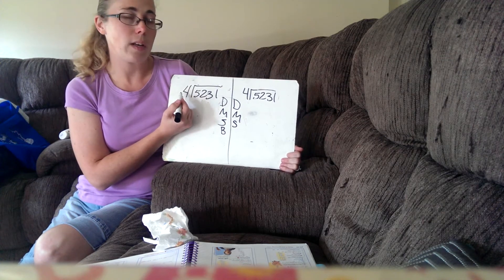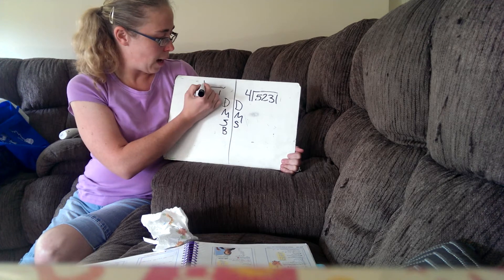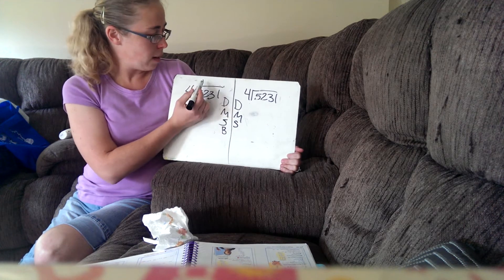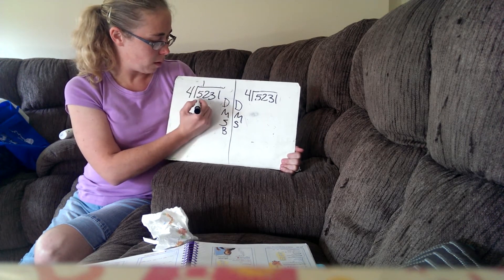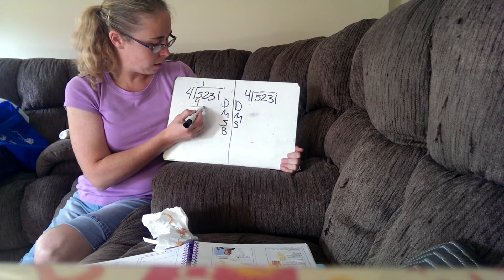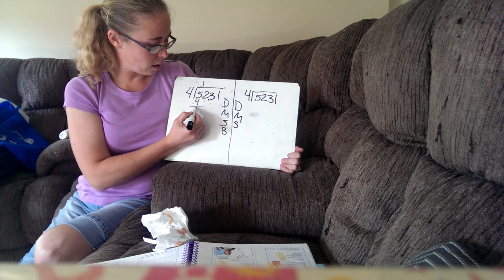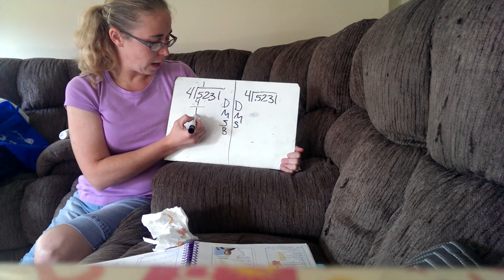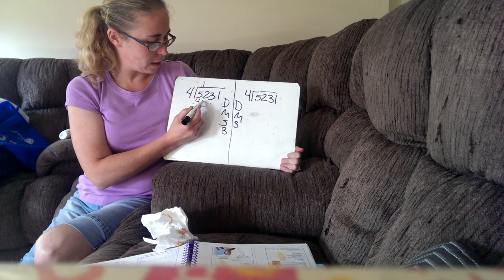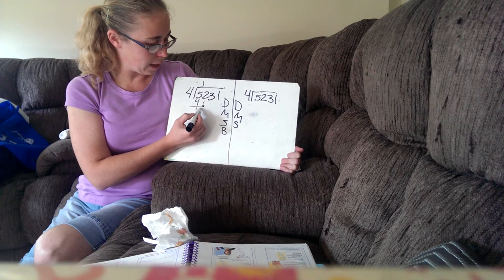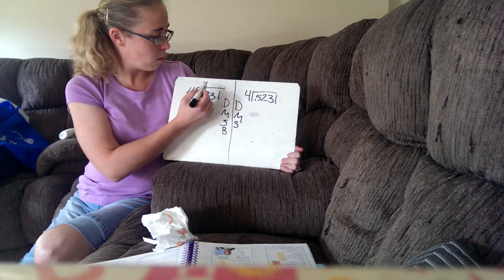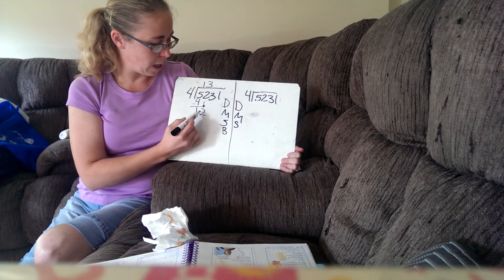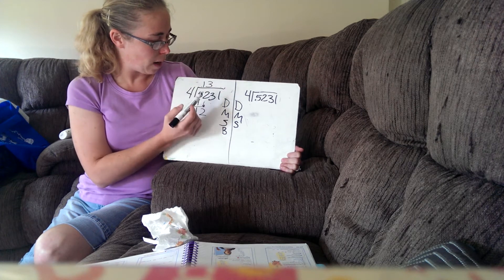Five can be broken into four groups one time. So we divide, and now multiply — one times four is four. Now we subtract: five minus four is one. Now we're at the B step, so we have to bring this guy down. Make sure we keep these all in alignment and bring it straight up.